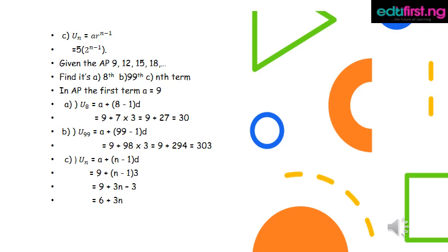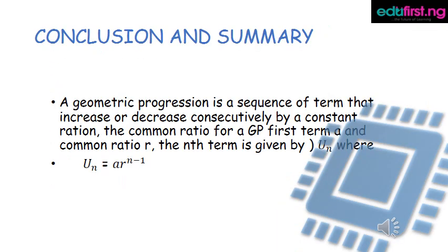Conclusion and summary: a geometric progression is a sequence of terms that increase or decrease consecutively by a constant ratio. For a GP with first term a and common ratio r, the nth term is given by u_n equals a times r raised to the power n minus 1.